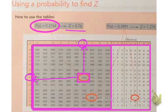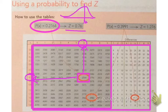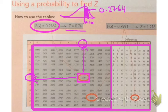So there's the Z value that matches a probability of 0.2764. And remember, that would be our normal distribution standard normal from a mean of 0 up to, and what we're doing is we're finding that area there. And that area is 0.2764, and we found the Z value underneath of 0.76.